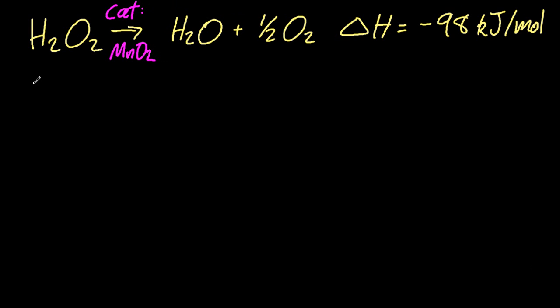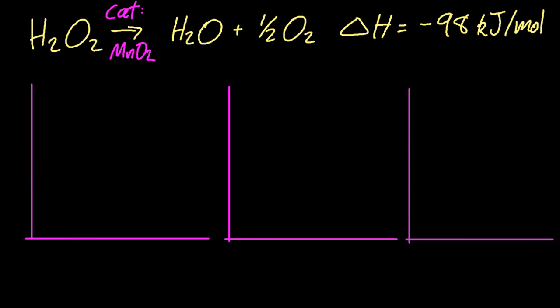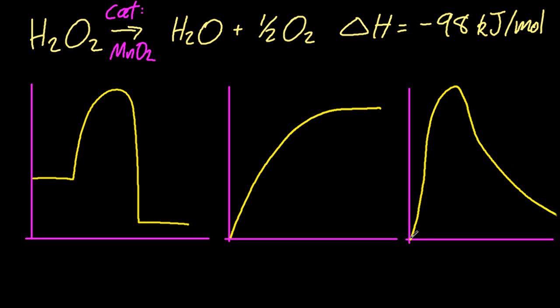Here's the decomposition of hydrogen peroxide, which is slow, but the rate can be increased by adding manganese dioxide catalyst. Three possible graphs that we could ask you about with catalysts are these ones here.